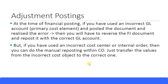But if you have entered all the relevant financial information and used an incorrect cost center — for example, instead of using the Cars production cost center, you used the Vans production cost center — then you can do a manual reposting. You simply take the values from the incorrect cost center and repost them to the correct one, using the same cost element. This applies to internal orders and other CO objects as well. This is called manual reposting in the CO module.